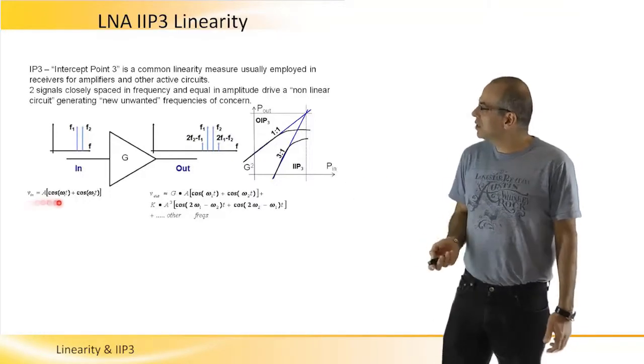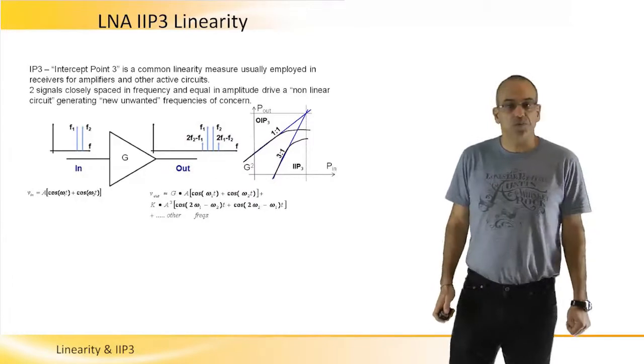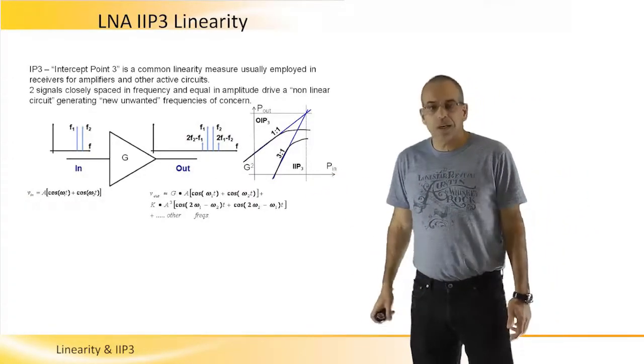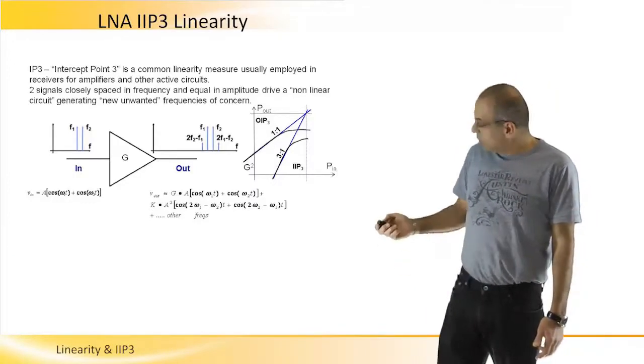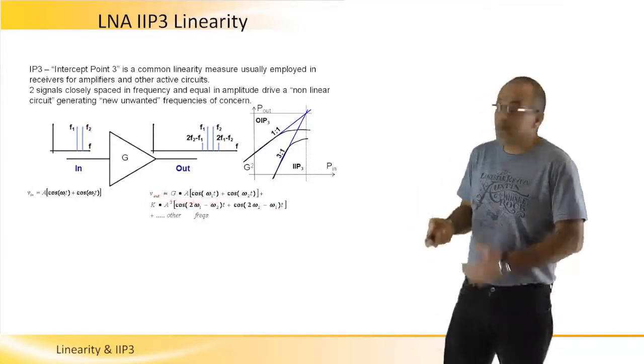So we introduce two tones and we measure the output spectrum. So if we have two cosine signals at the input, what we will find that at the output, we will find these two cosines amplified.